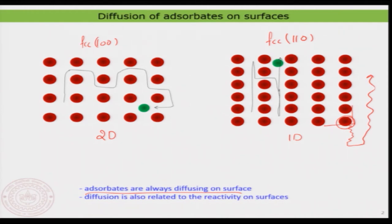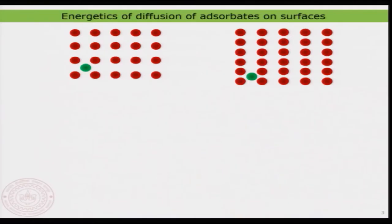Surface atoms themselves and the ad atoms you put on the surface are always dynamic. If you want to use these surfaces to understand reactivity, or look at how a reaction happens on a catalytic surface, it is quite important to understand the diffusion of atoms. If I want to take two atoms and let them react I also need to know how these atoms diffuse on the surface, otherwise the reaction would not even happen. So let us try to understand what really controls the diffusion of adsorbates on surfaces.